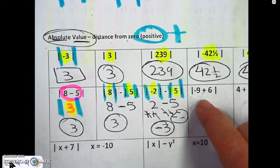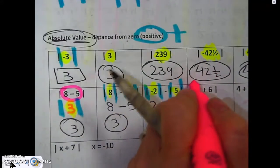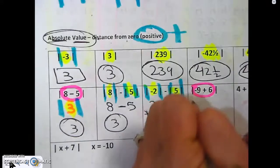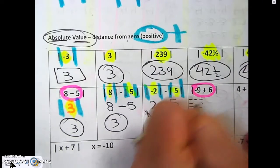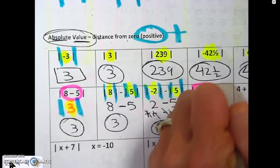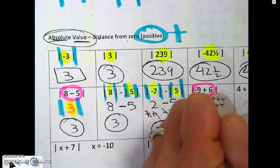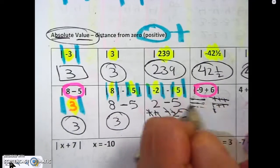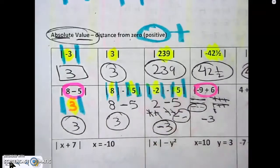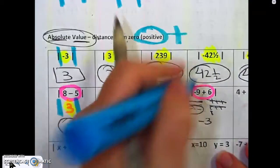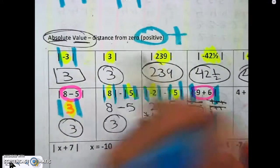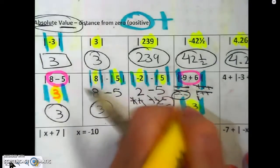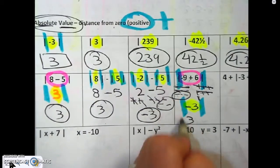So this one is just like this one. We can't make it positive until we just have a number. So I do my negatives: one, two, three, four, five, six. Three and three cancel — boom, negative three. But the thing is, it's still in the bars. So now take this number and make it positive.